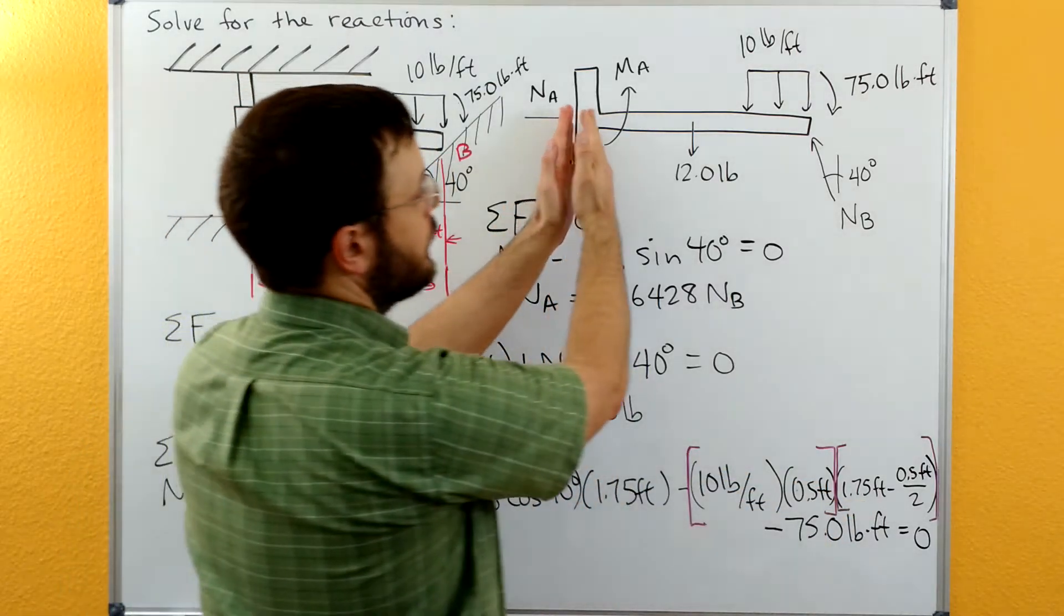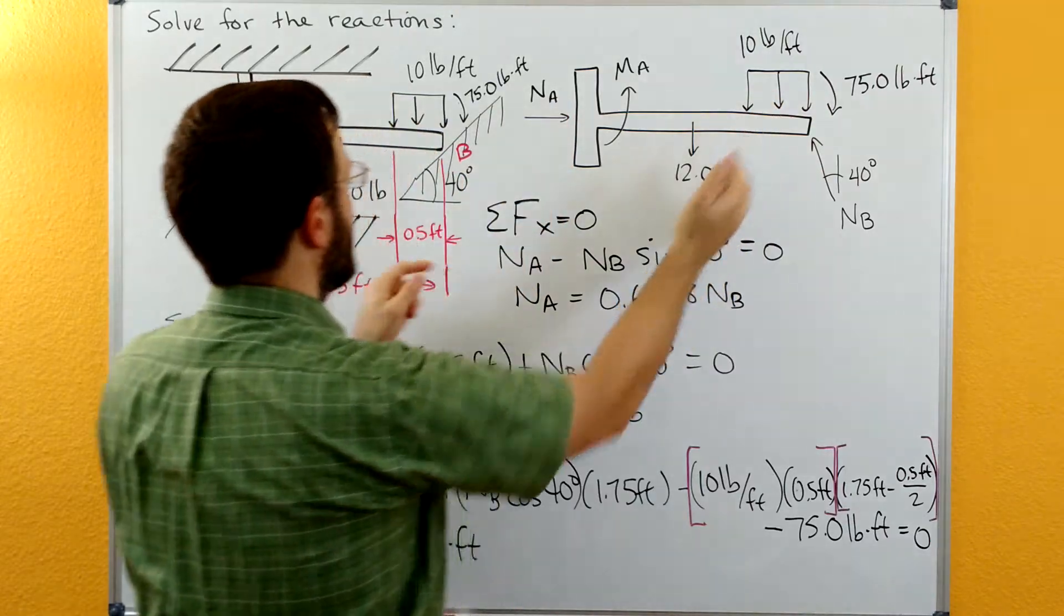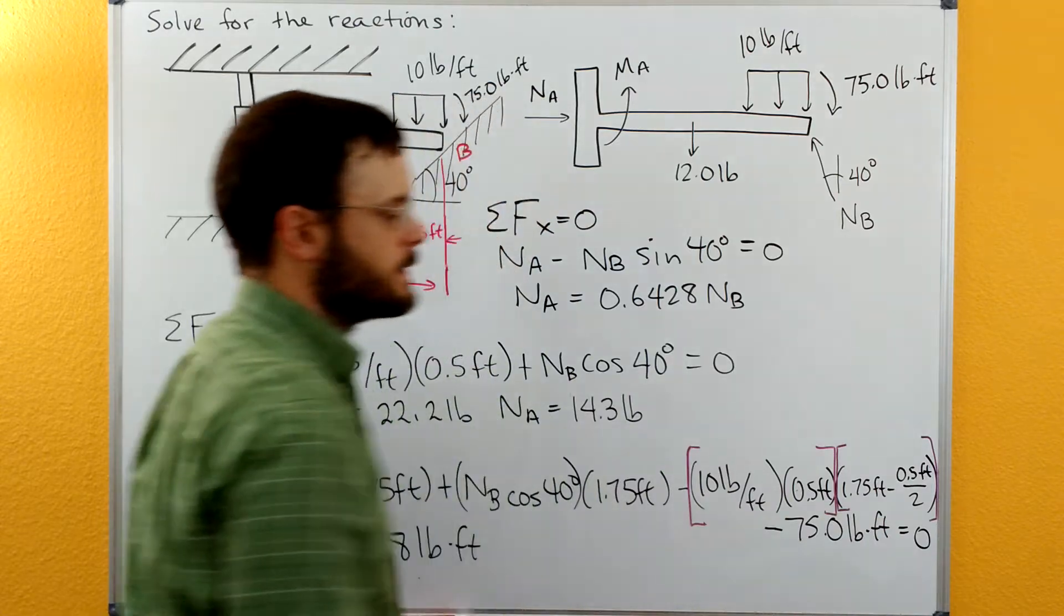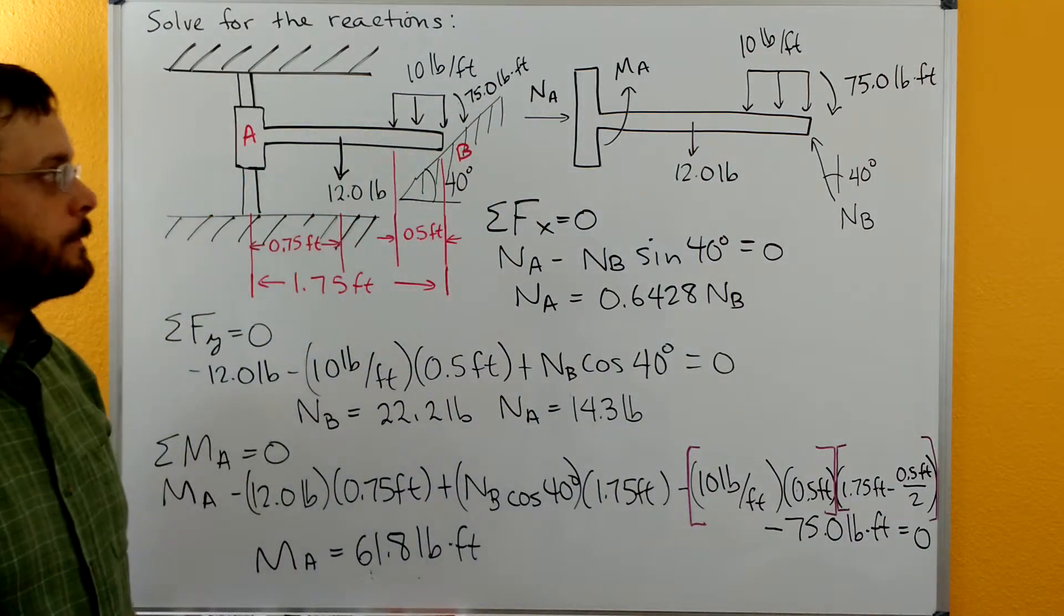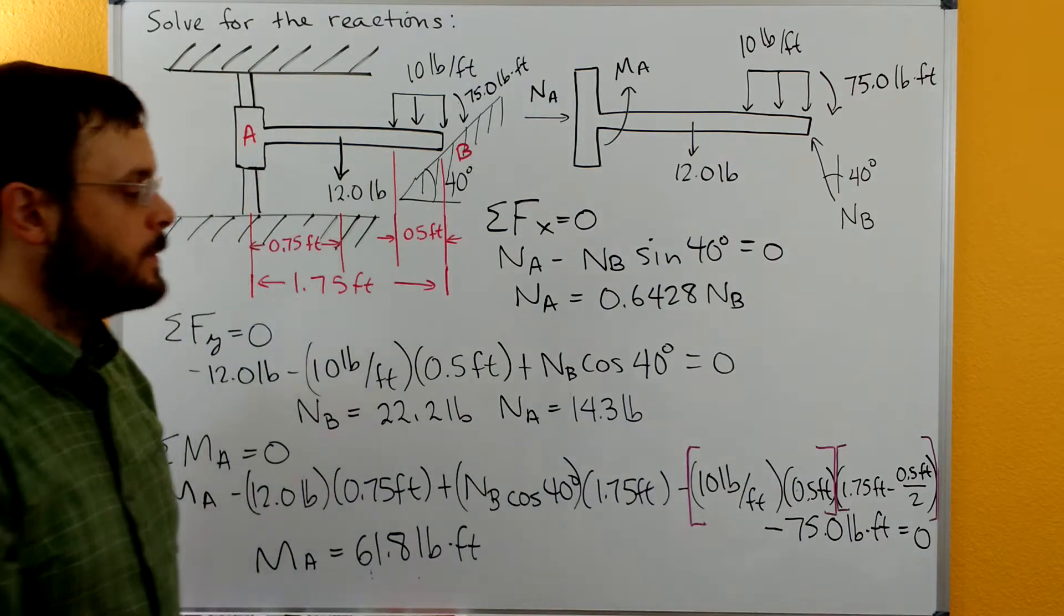Then we need to multiply that by our distance. We're going to go all the way up to the end, 1.75, and then come over half of the 0.5 back from the end. So 1.75 minus 0.5 divided by 2. That distributed load gives us a negative contribution to the moment.